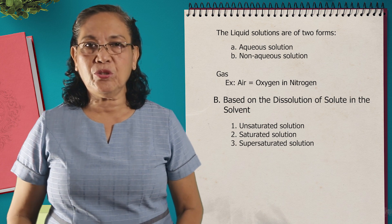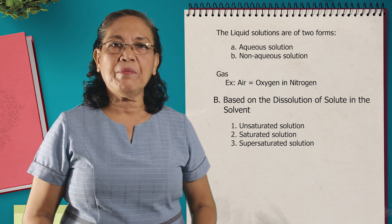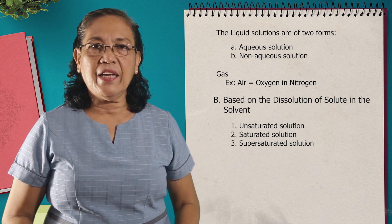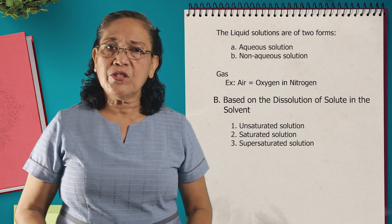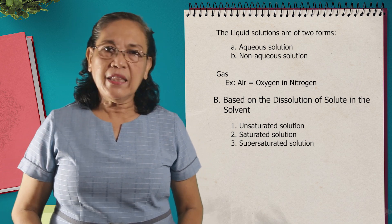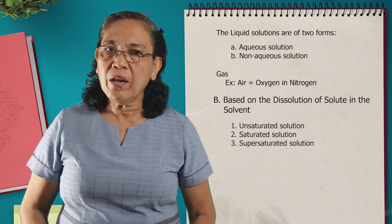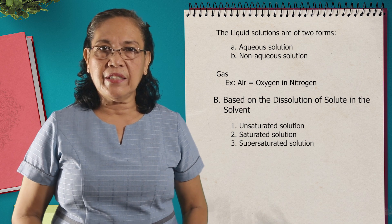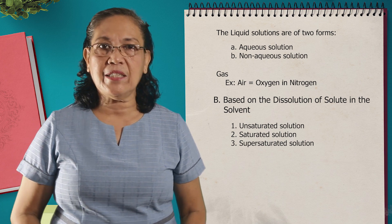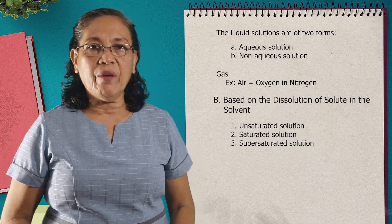Another is the saturated solution. For a saturated solution, this is a kind of solution wherein it contains already the maximum amount of solute that the solvent can dissolve at a given temperature — no more than that. And you have the supersaturated solution. In the supersaturated solution, this is a solution that contains a lot of the solute wherein the solvent can no longer dissolve at a given temperature. Meaning, if you add more of the solute, then this solute in excess will recrystallize. So in a supersaturated solution, recrystallization of the solute can occur.